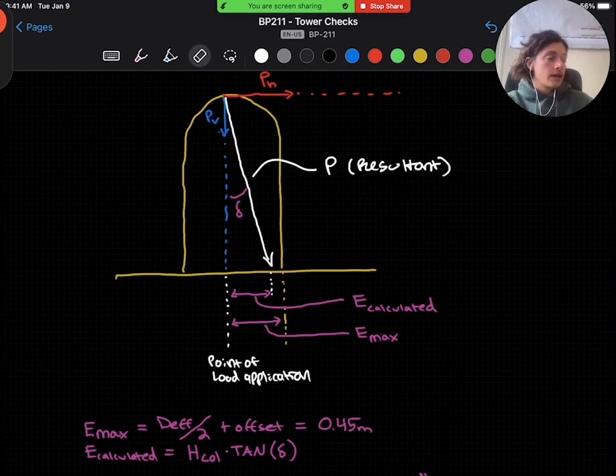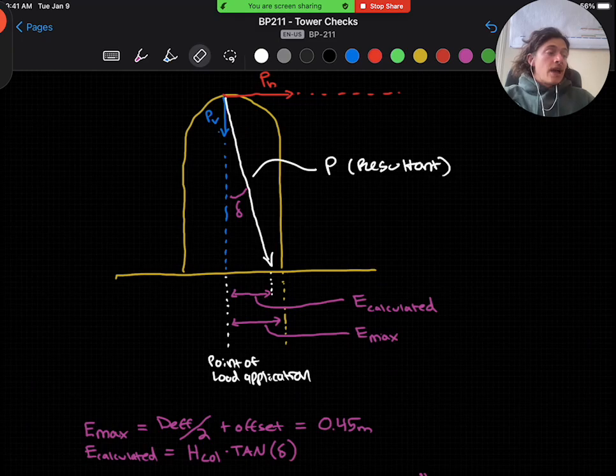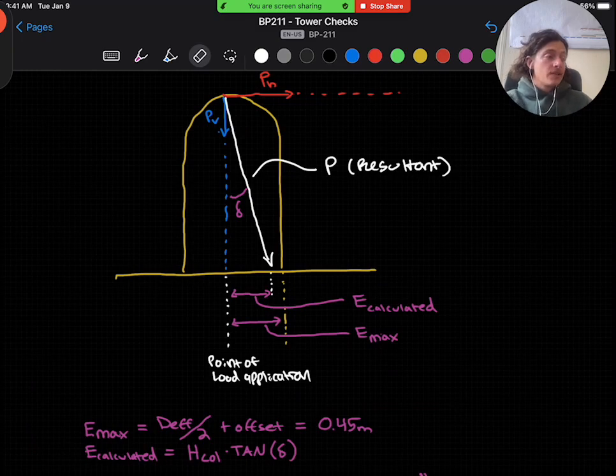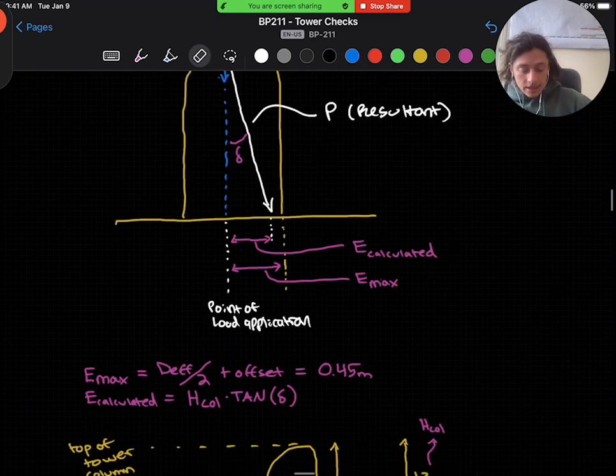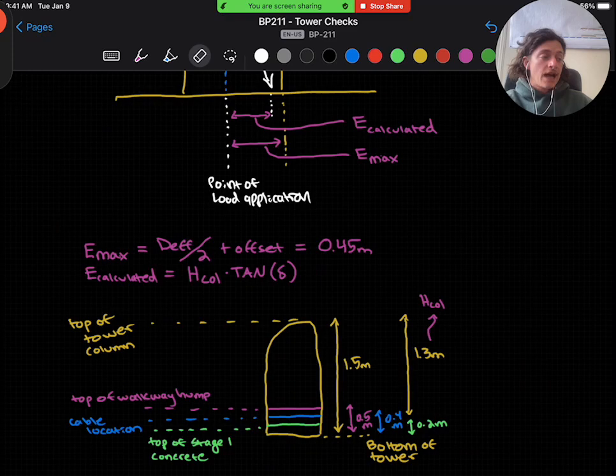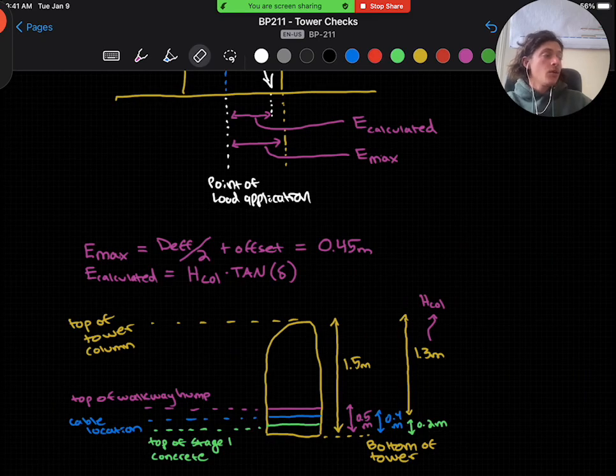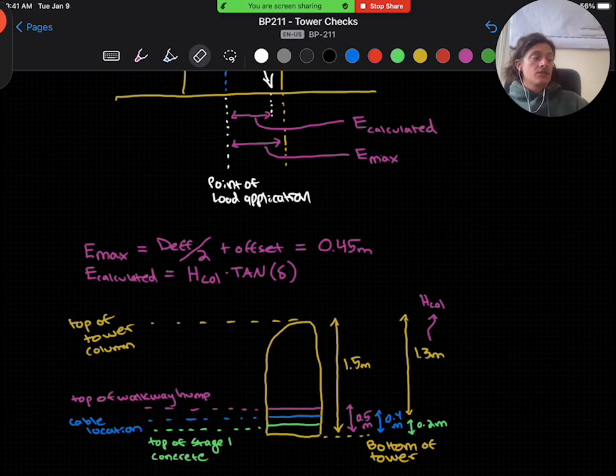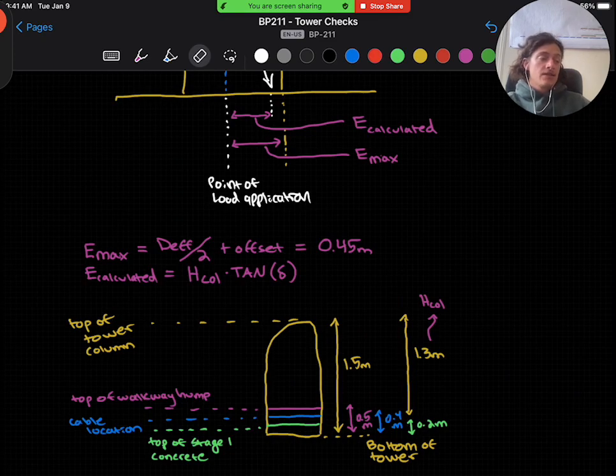A quick note here, like I said before, because we have a couple of different tower heights. From the top of the tower to the bottom where it meets the first tier of the standard tower detail is 1.5 meters. The top of the walkway hump is 0.5 meters high, but the walkway cables are thread at a height of 0.4 meters, which is the location of the walkway forces. So for the purpose of analyzing a single tower column, we'll use that h column value of 1.3 meters, which is the distance again from the top of the tower to the top of the stage one concrete. And this is noted on the drawings and you can reference those.